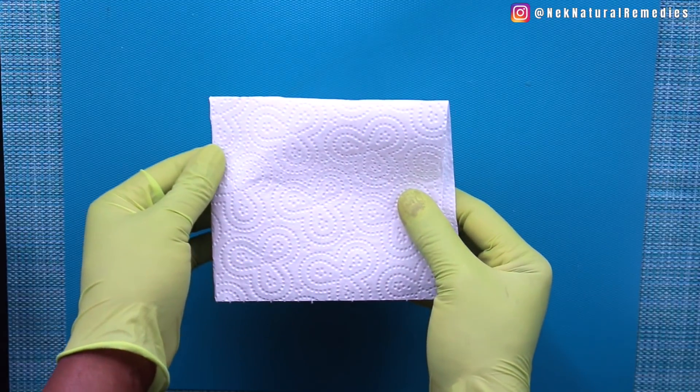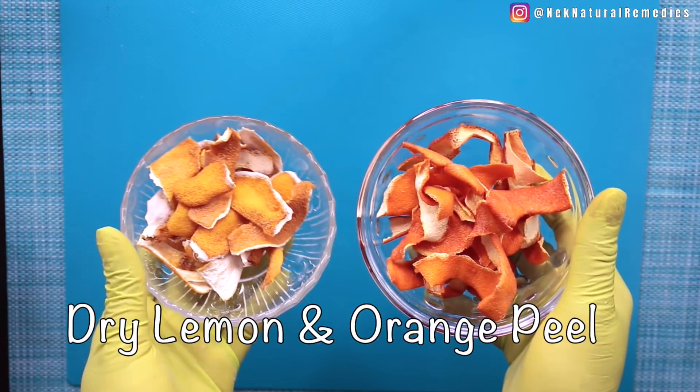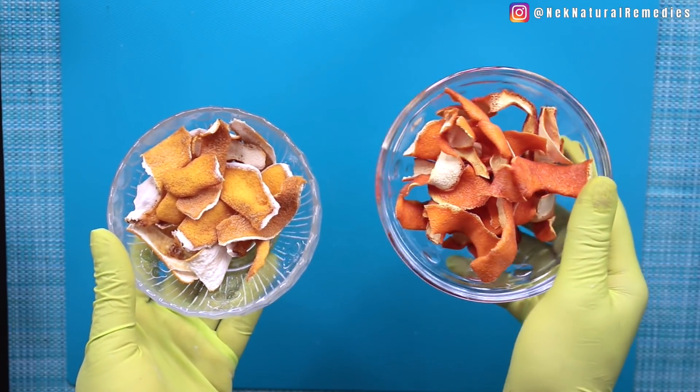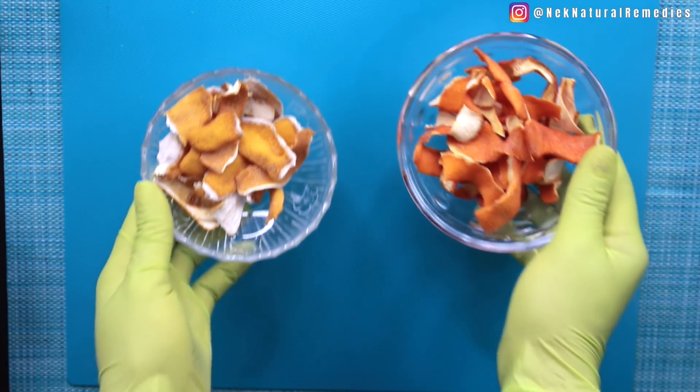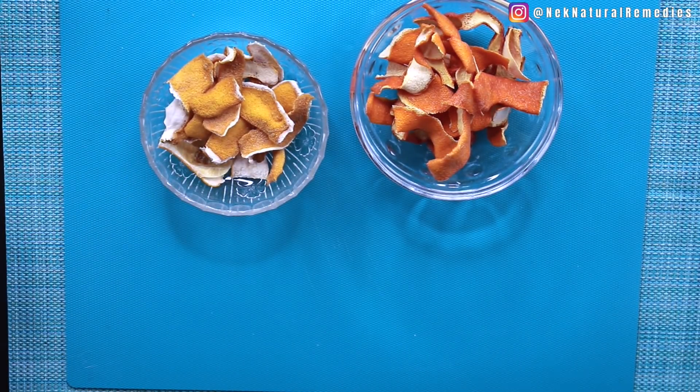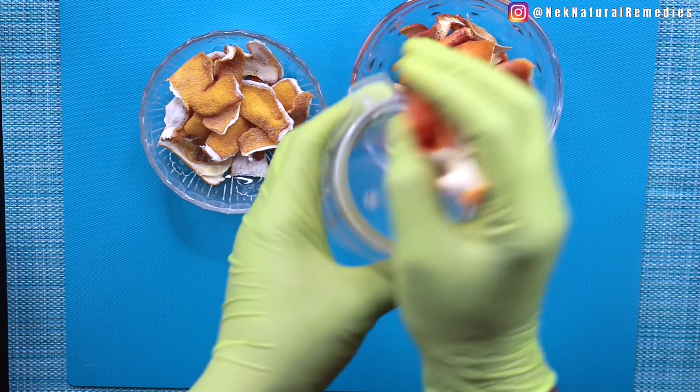Our next ingredient here are lemon peel and orange peel. This is the peel of the oranges and lemons I used in my previous videos. Guys, I believe you saw when I was saving the peels of the orange and lemon and grapefruit. So this is what I'm doing with the peel of those citrus fruits.